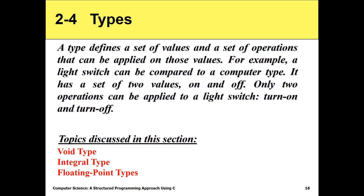Now we have the data types in C. A type defines a set of values and a set of operations that can be applied to those values. For example, a light switch can be compared to a computer type. It has a set of two values — on and off — and only two operations can be applied to a light switch: turn off and turn on.